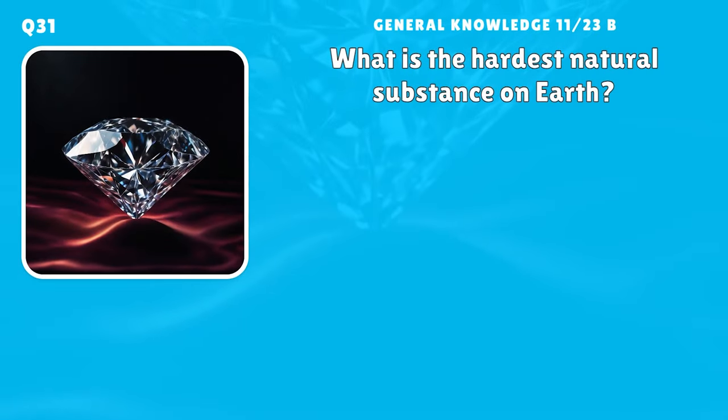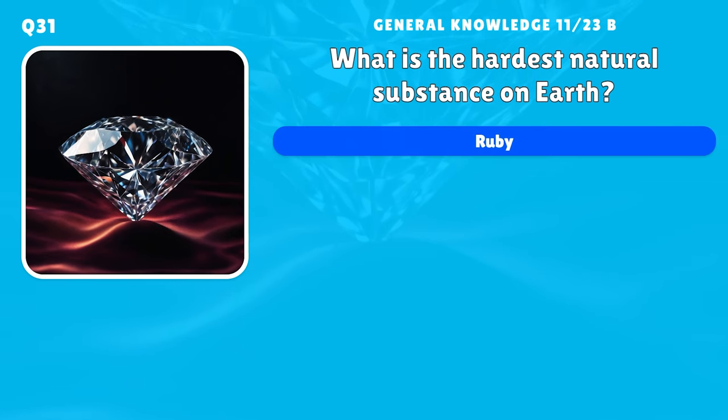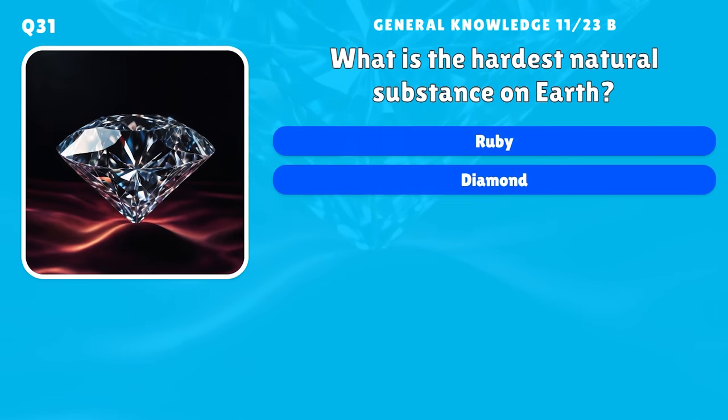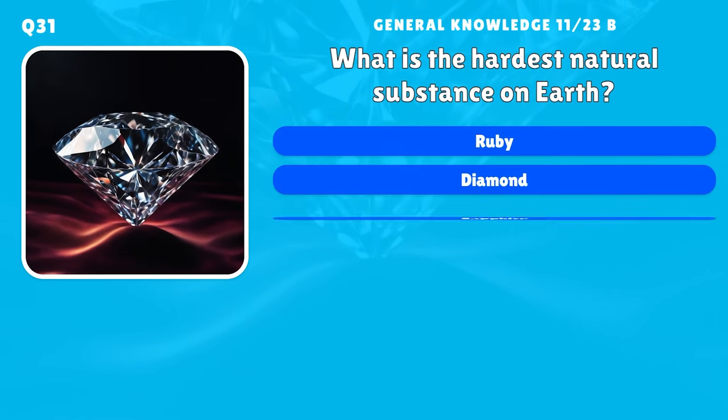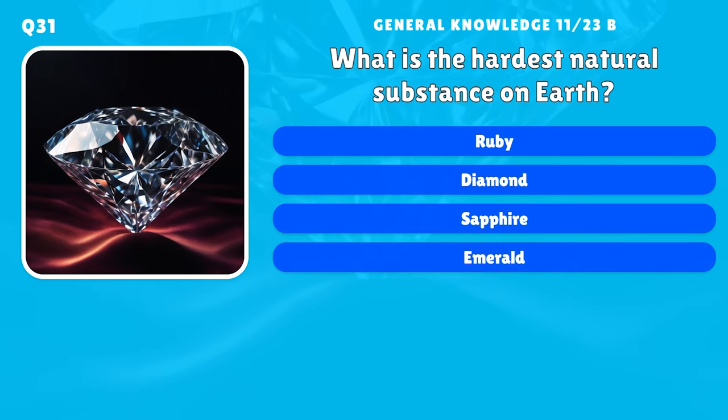What is the hardest natural substance on earth? A) Ruby, B) Diamond, C) Sapphire, D) Emerald.